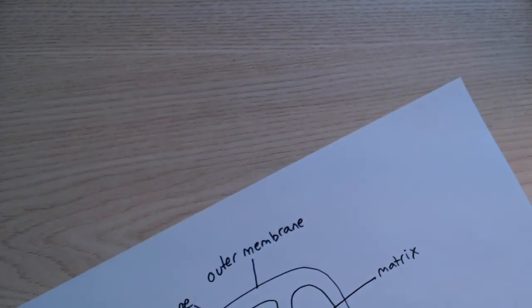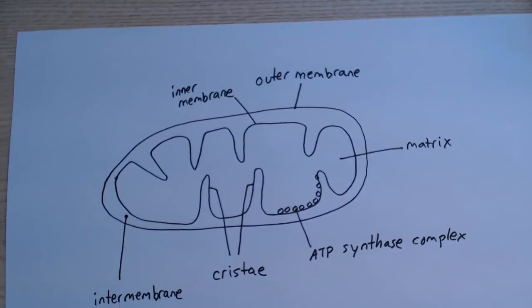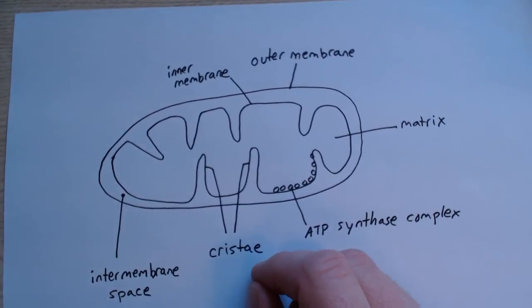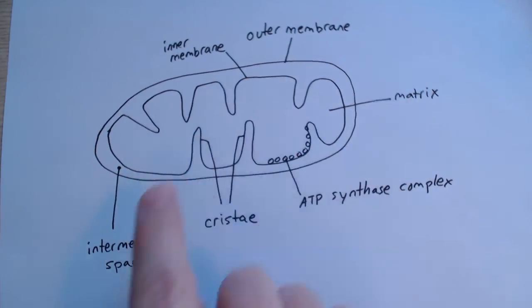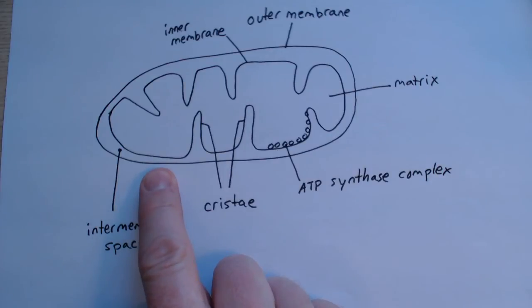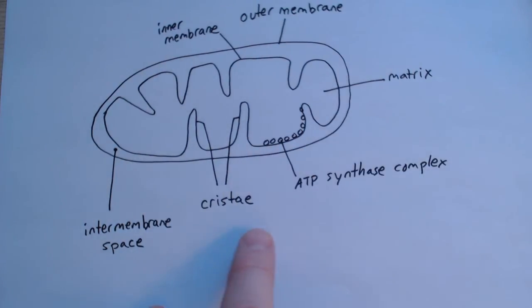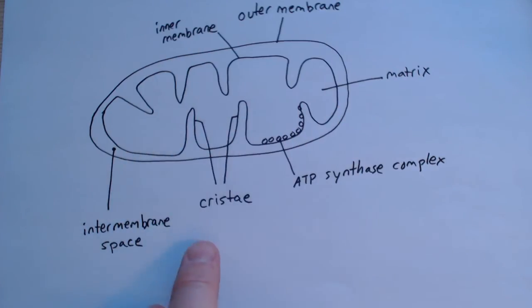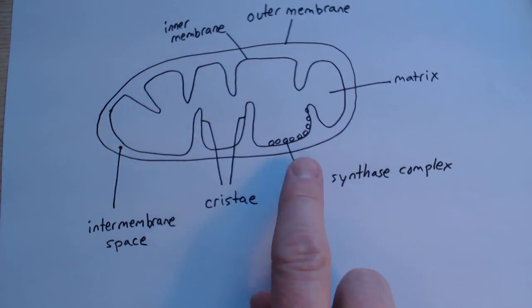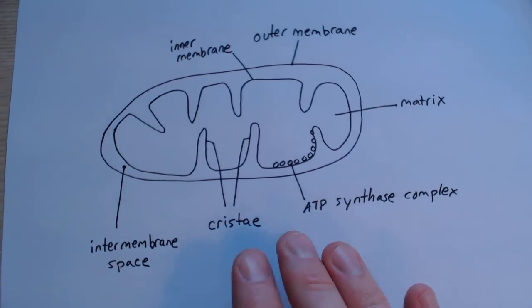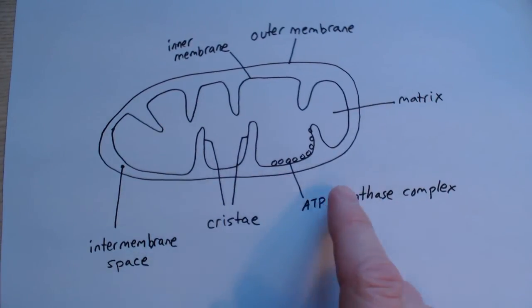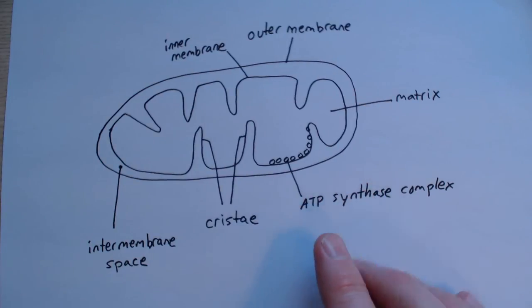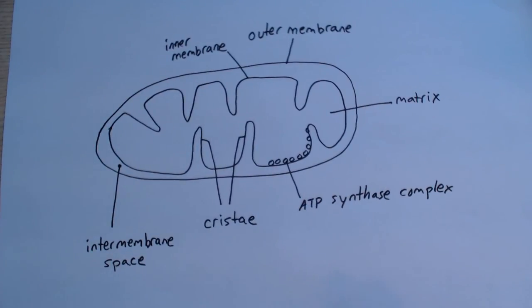For the mitochondria, we have the outer membrane, the inner membrane, the intermembrane space, the cristae, the matrix in the center, and the ATP synthase complex. We won't be talking about each of these parts in turn, but a lot of what we talk about down the line is based in the mitochondria. Just to give you a basic map of where these things are going to take place.